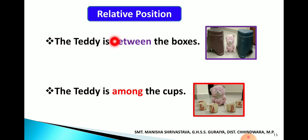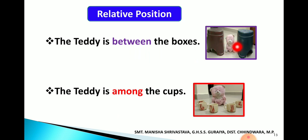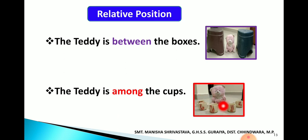Relative position continued: 'The teddy is between the box' — between हमेशा दो चीजों के लिए होता है — यहां दो box हैं और उनके बीच में teddy है. 'The teddy is among the cups' — यहां teddy के आसपास बहुत सारे cups रखे हुए हैं. जब एक से ज्यादा चीजों के बीच की बात करते हैं तो 'among' का use करते हैं, और जब दो के बीच की बात करते हैं तो 'between' का use करते हैं.